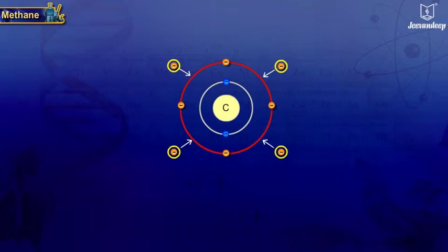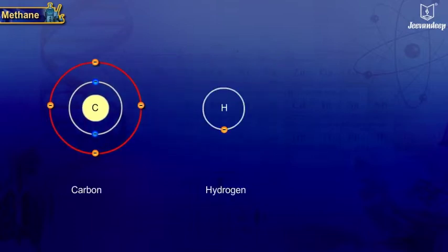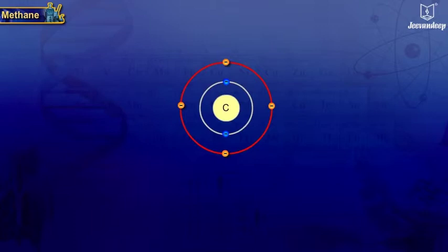Hydrogen has one electron in its first shell and requires one electron to complete its duplet like helium. To complete its octet, one carbon atom shares its four outermost electrons with four electrons of four hydrogen atoms.